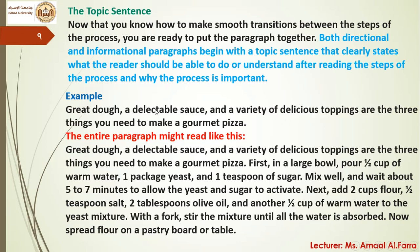These are the three steps that will be explained after the topic sentence. The entire paragraph might read like this: 'Great dough, a delectable sauce, and a variety of delicious toppings are the three things you need to make a gourmand pizza.' First, in a large bowl, pour half a cup of warm water, one package yeast, and one teaspoon of sugar. Mix well and wait about five to seven minutes to allow the yeast and sugar to activate.